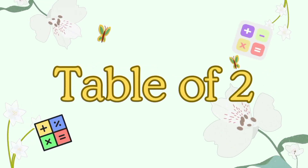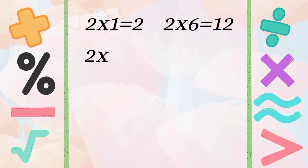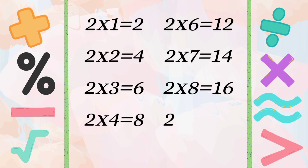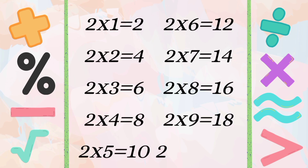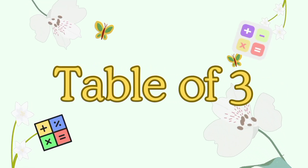Table of 2: 2×1=2, 2×2=4, 2×3=6, 2×4=8, 2×5=10, 2×6=12, 2×7=14, 2×8=16, 2×9=18, 2×10=20.